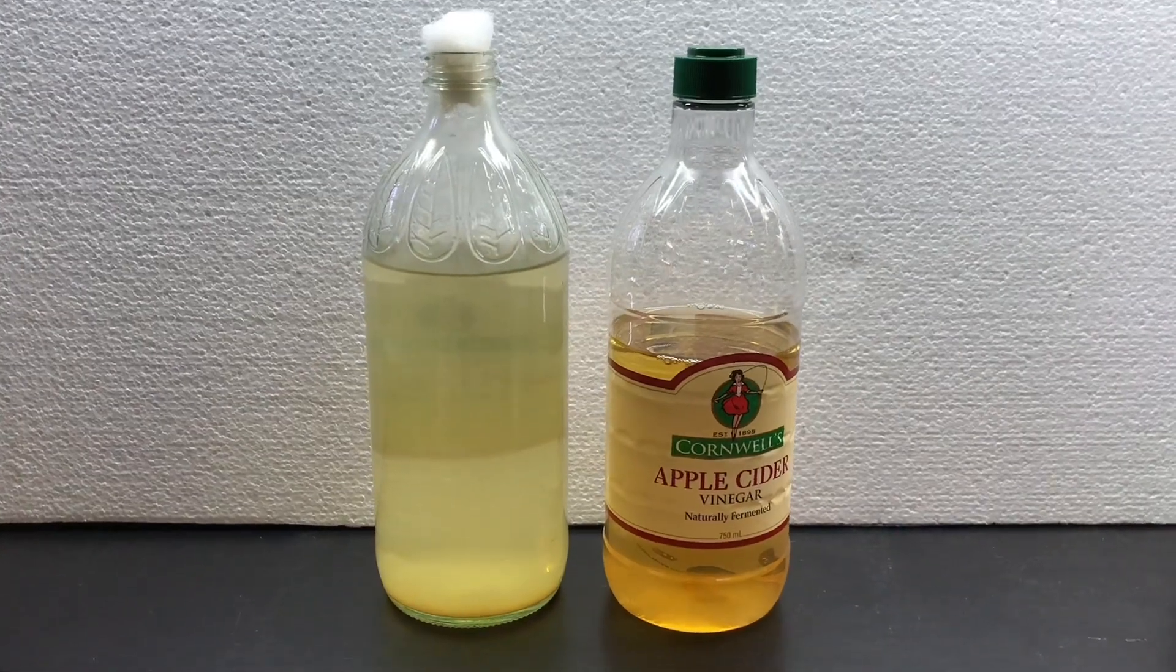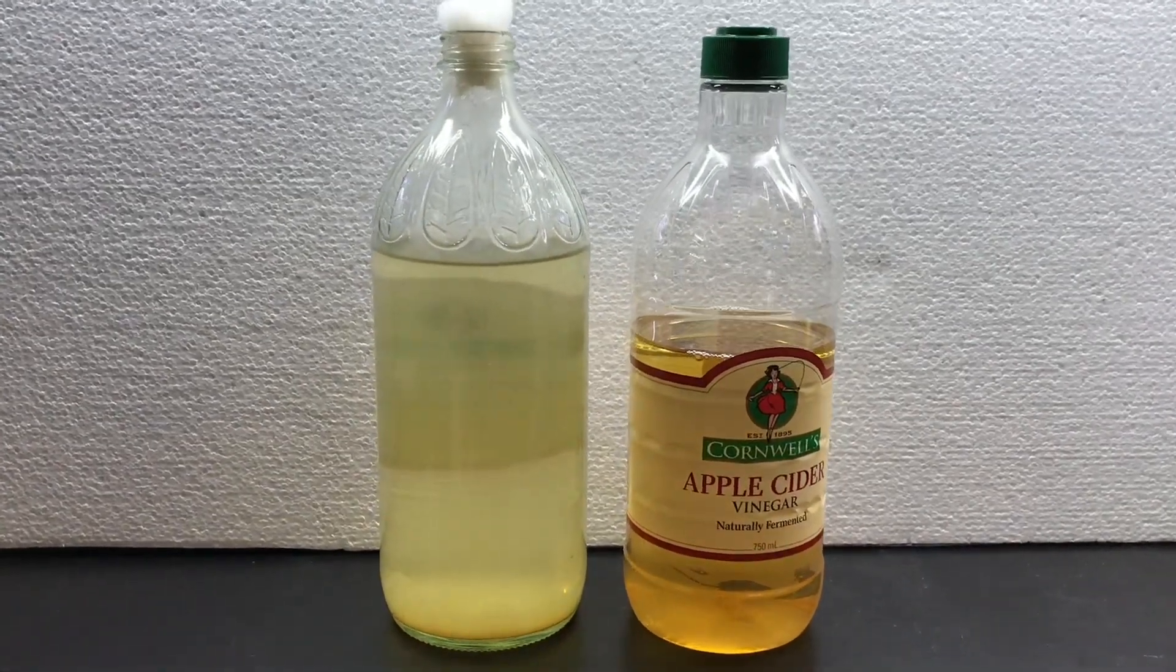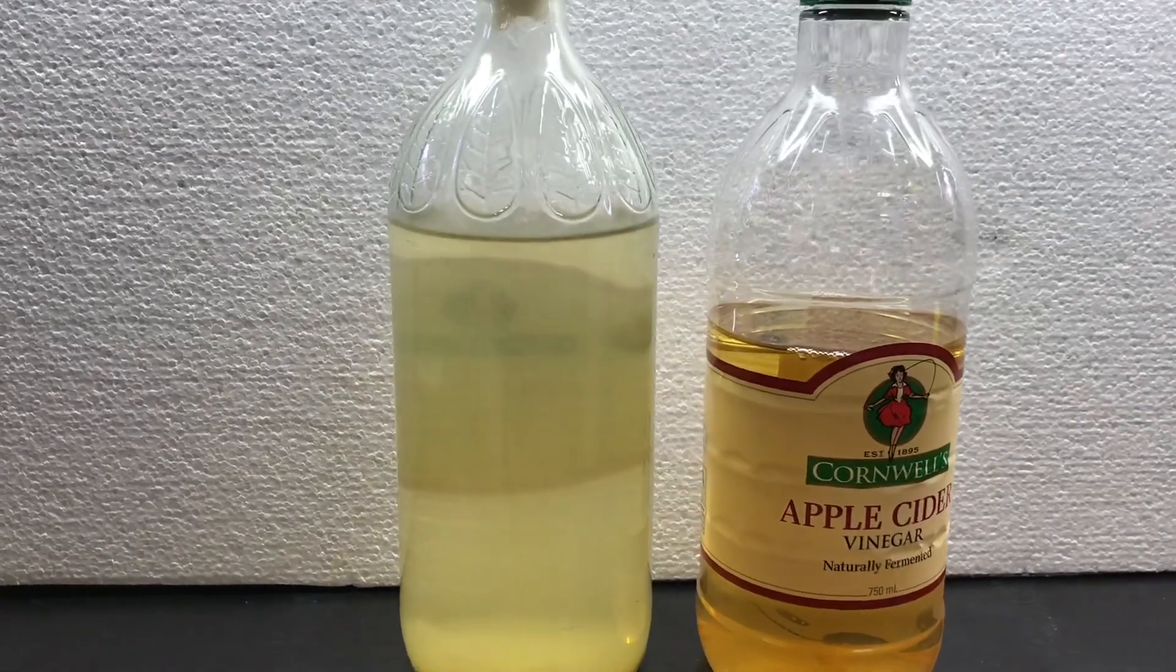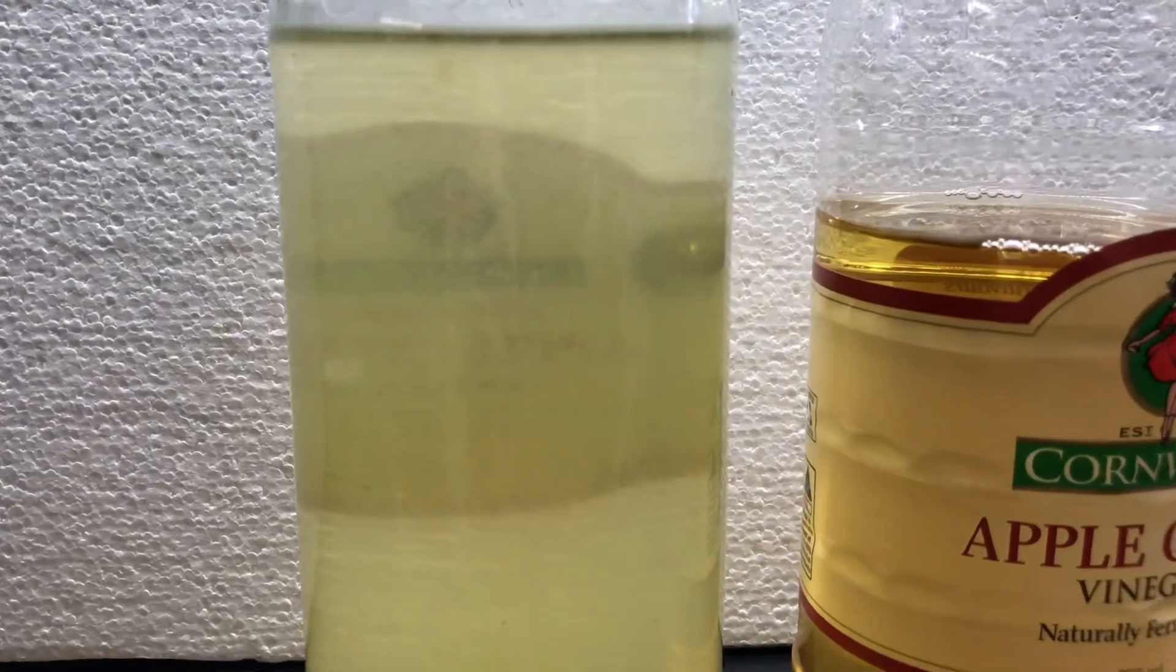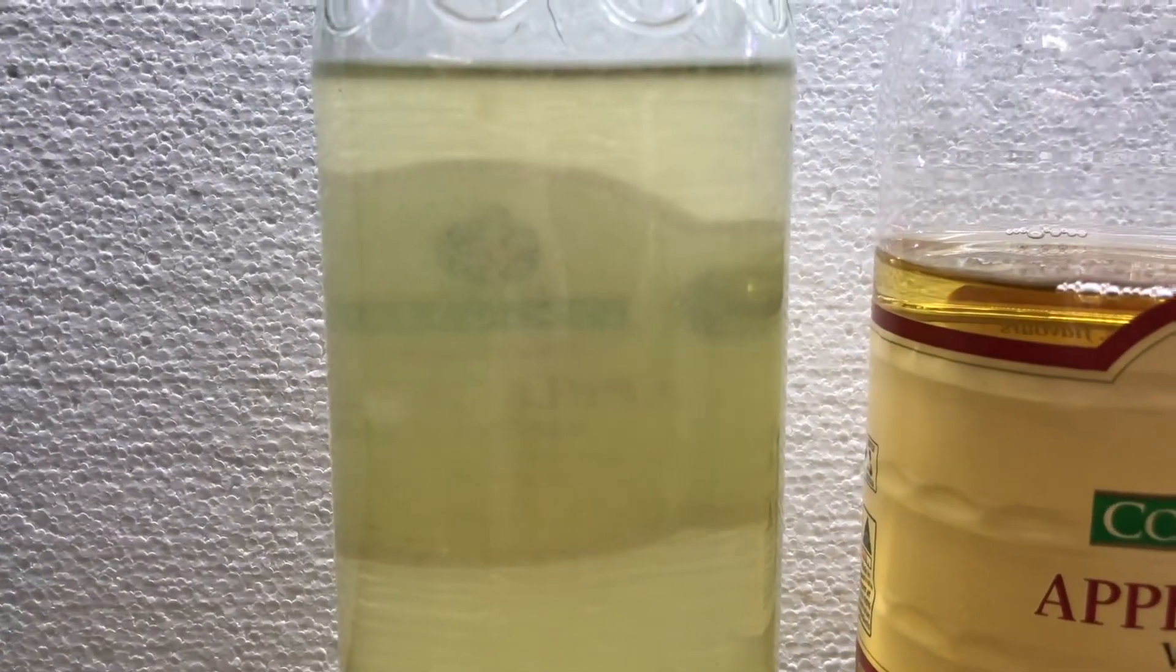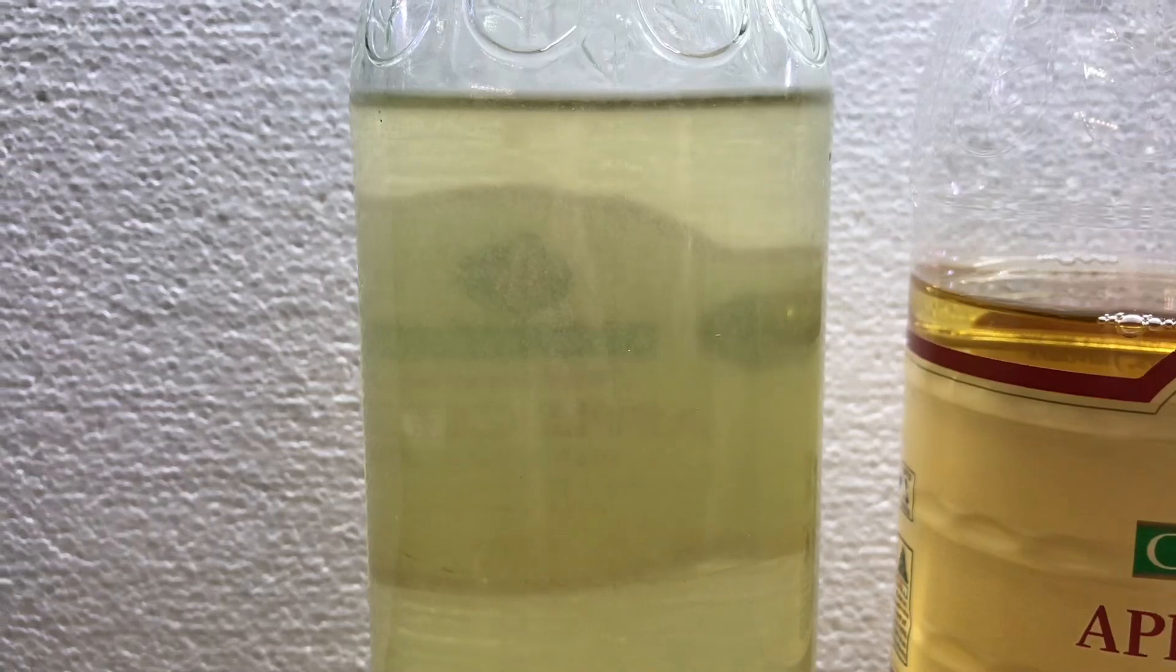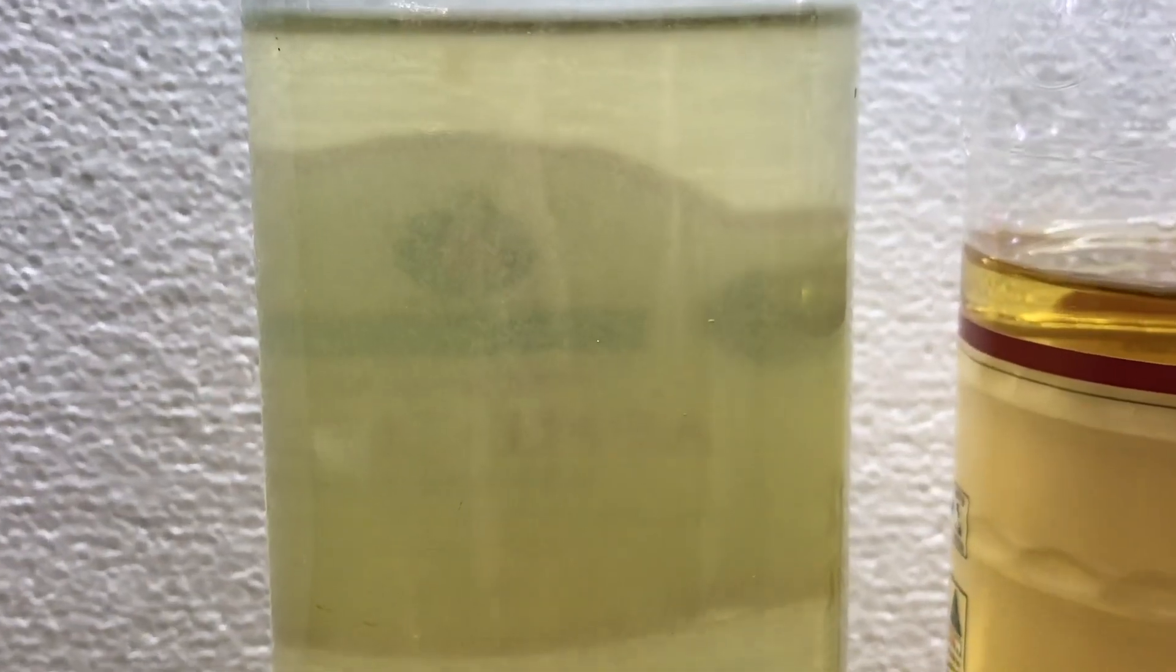Here we have two jars. The one on the left is the established culture and the one on the right is just pure apple cider vinegar, and that's basically what we use to culture the vinegar eels.